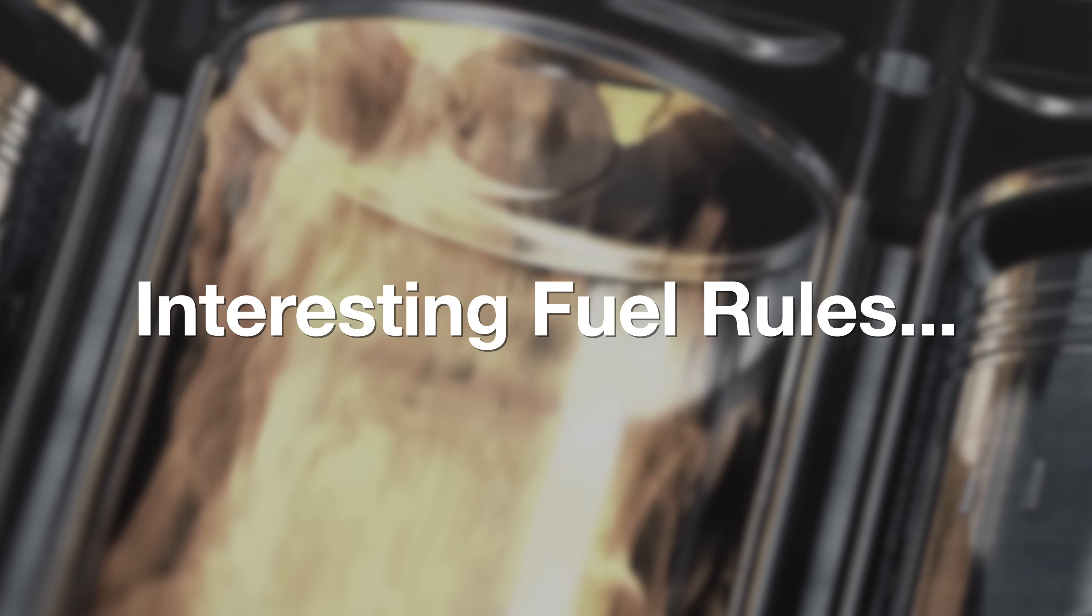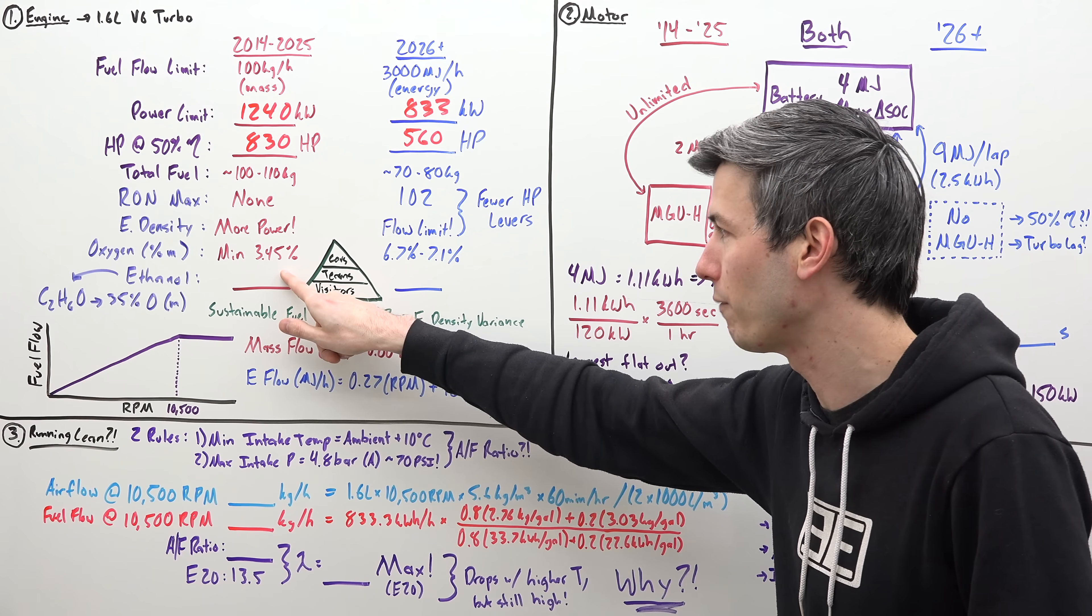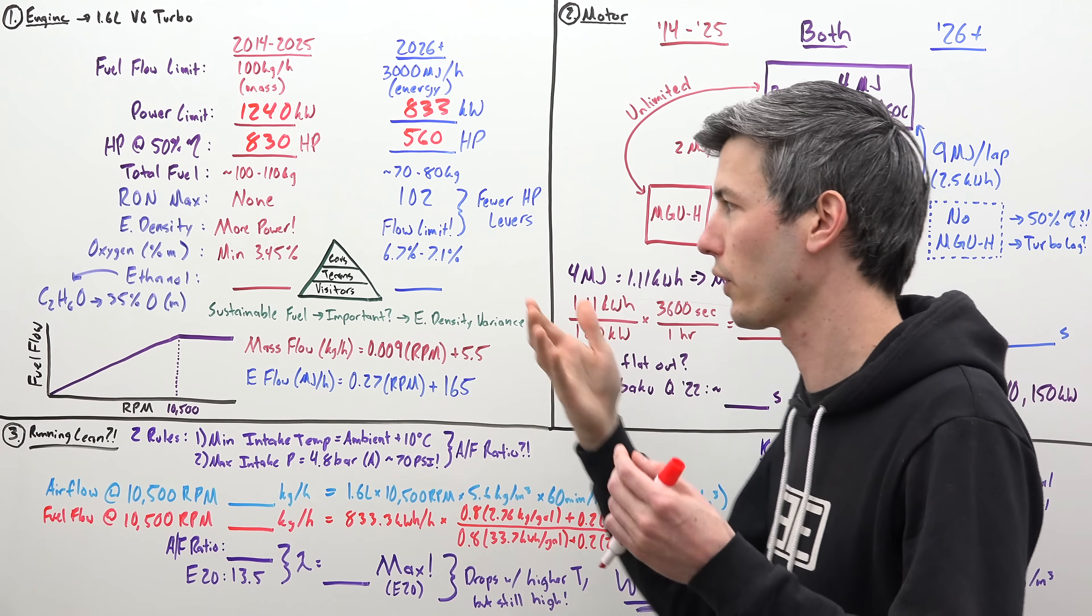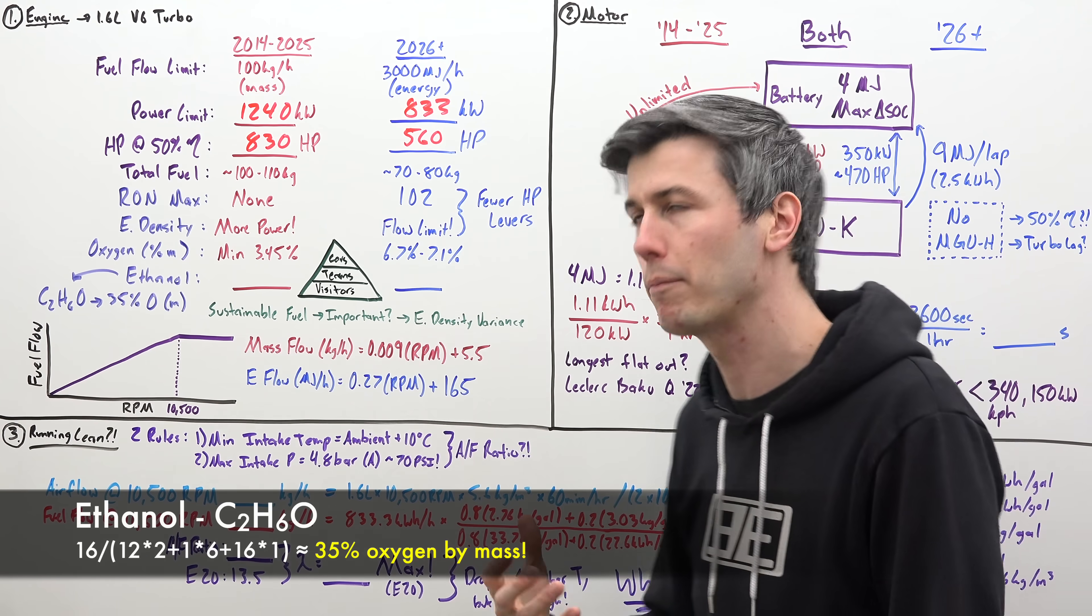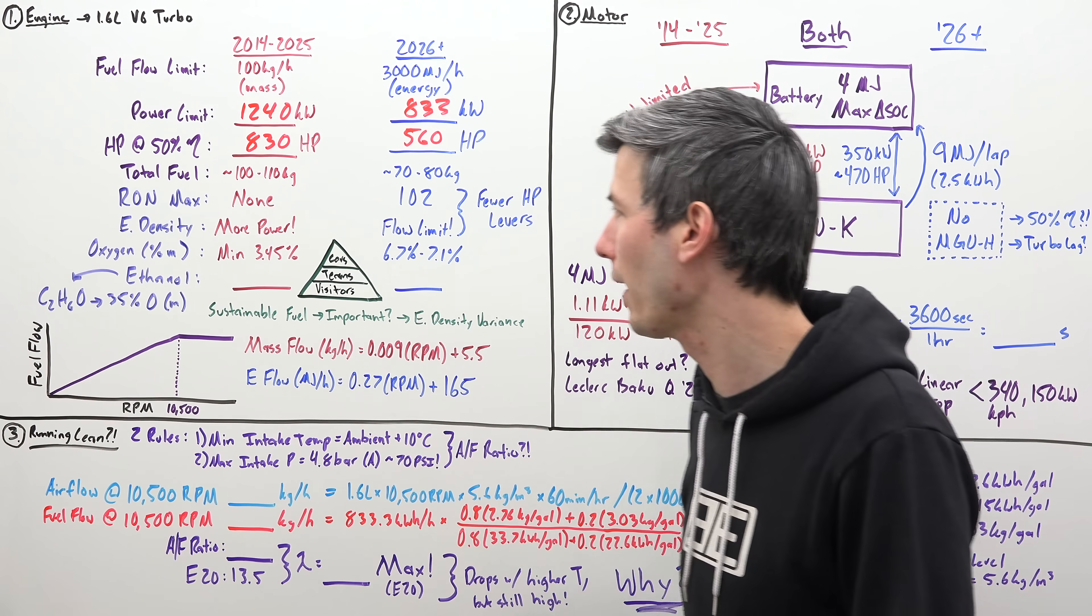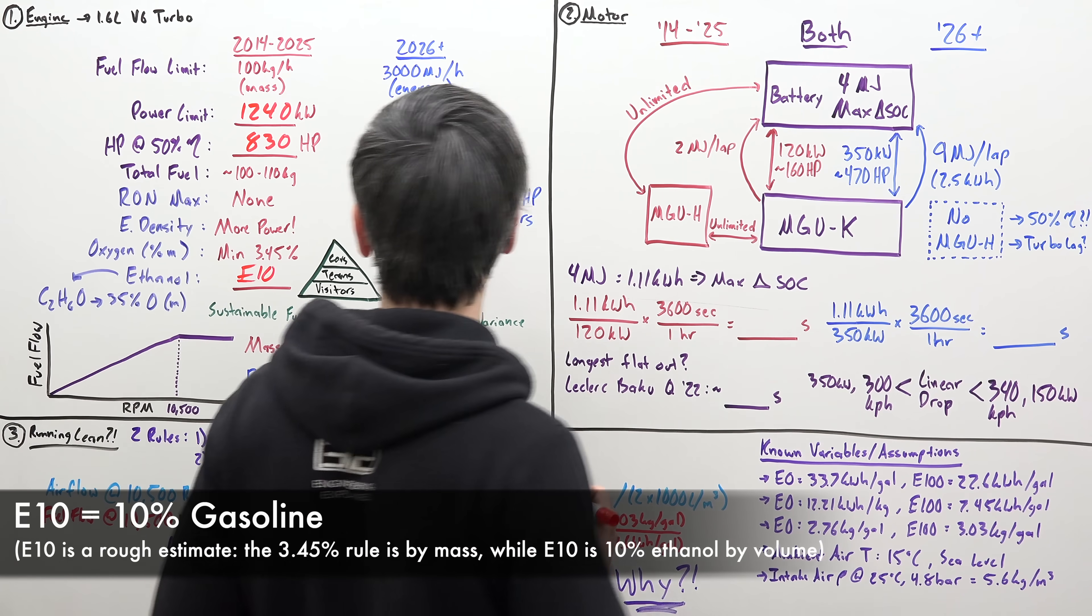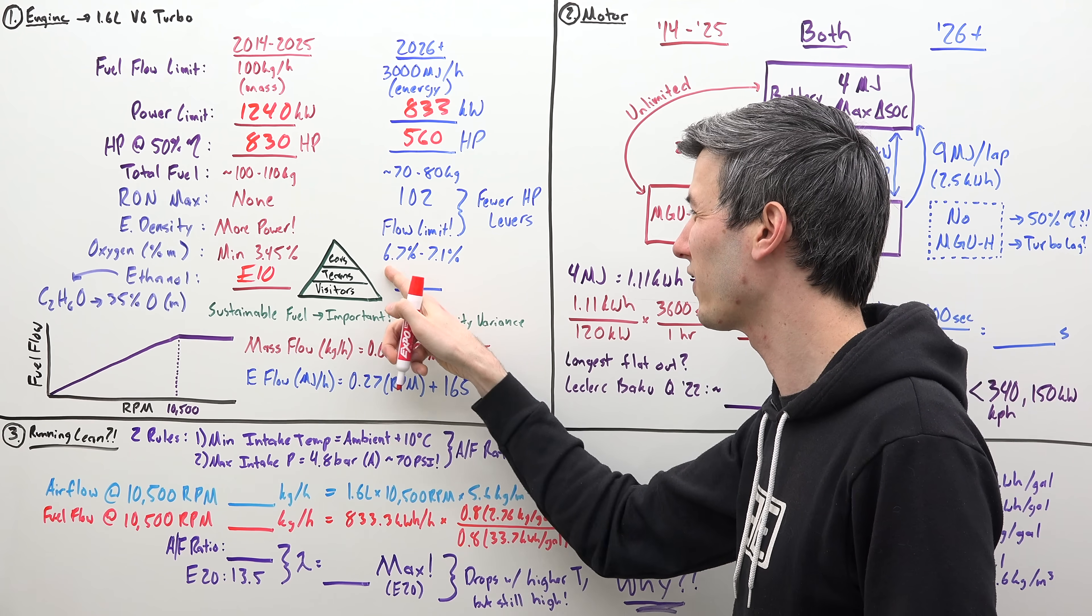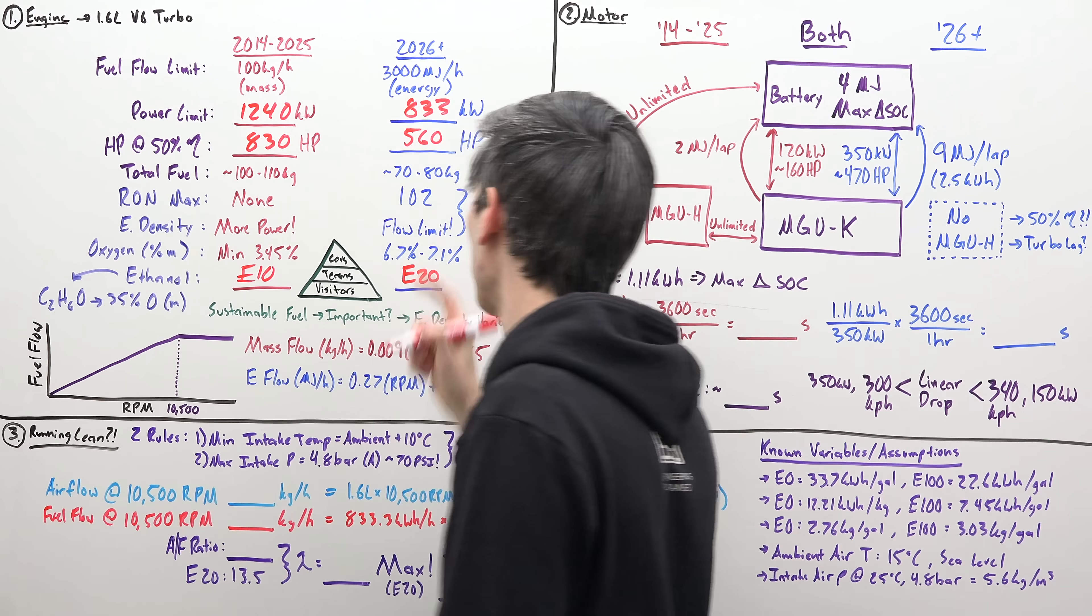Now, a few additional points about the fuel that are very interesting. Currently, there is a minimum amount of oxygen by mass that you must have in the fuel of 3.45%. Gasoline by itself does not have oxygen in it, so you have to have something added to it, for example ethanol. Oxygen by mass is about 35% of the weight of ethanol. So if you need about 3.5%, this is 35% by mass, you need about 10% ethanol, meaning about E10. That would be a valid fuel to use in Formula 1 currently. Now, that is changing to a range from 3.45% as a minimum to 6.7% to 7.1% by mass. So we're looking at something like an E20 for the fuels for 26 and beyond.